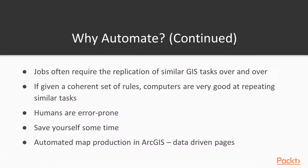In your jobs, you'll often have to do the same thing over and over again. For example, making the same kind of map for different study areas, or churning out different reports that have the same format but for different clients. However, if given a coherent set of rules, computers are very good at doing this kind of thing. They can repeat similar tasks over and over again.